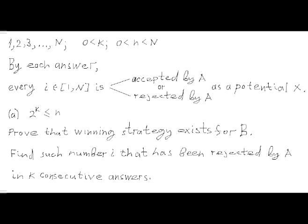The game ends when player B specifies a sublist of the initial list. If number X belongs to this sublist, player B wins; otherwise player B loses.